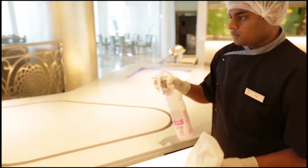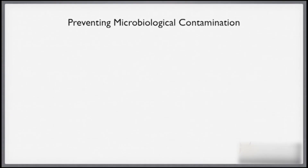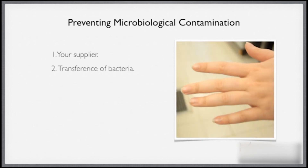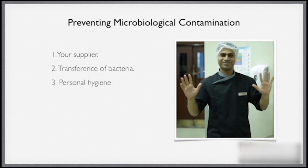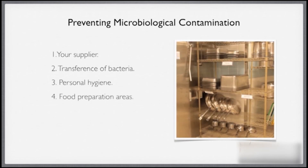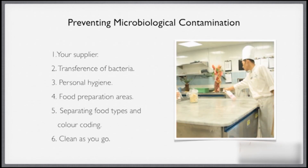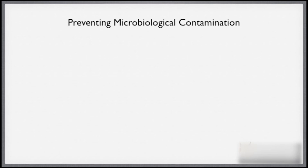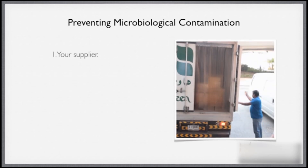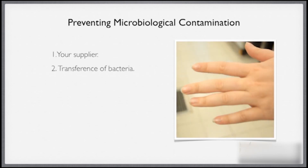Let's have another look at preventing microbiological contamination. We saw that microbiological contamination can be prevented in six ways. Number one: your supplier needs to maintain hygienic standards, so that the food is uncontaminated when you receive it. Number two: in everything you do, the transference of bacteria from one area to another must be avoided.